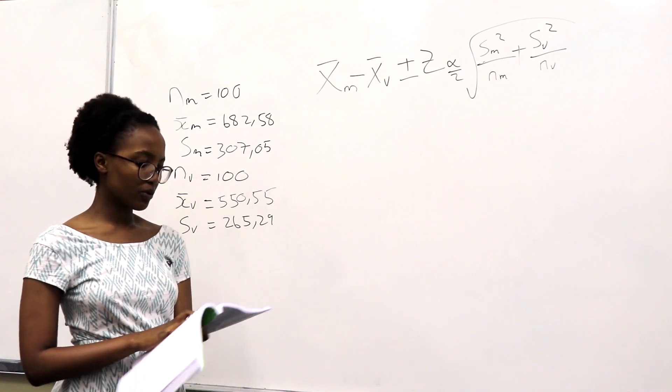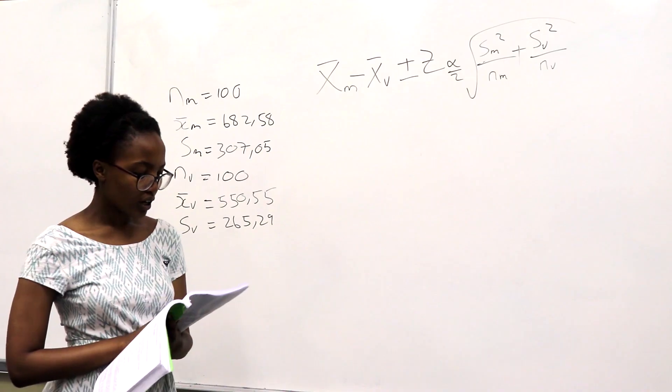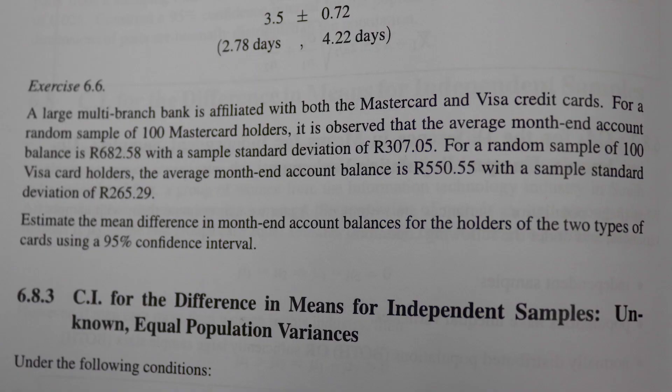We'll be doing exercise 6.6 on page 112 in our module which reads as follows. A large multi-branch bank is affiliated with both MasterCard and Visa Credit cards. For a random sample of 100 MasterCard holders,